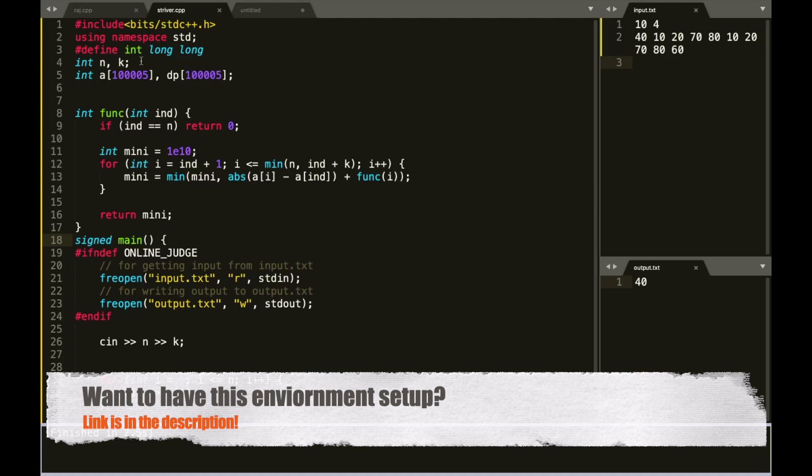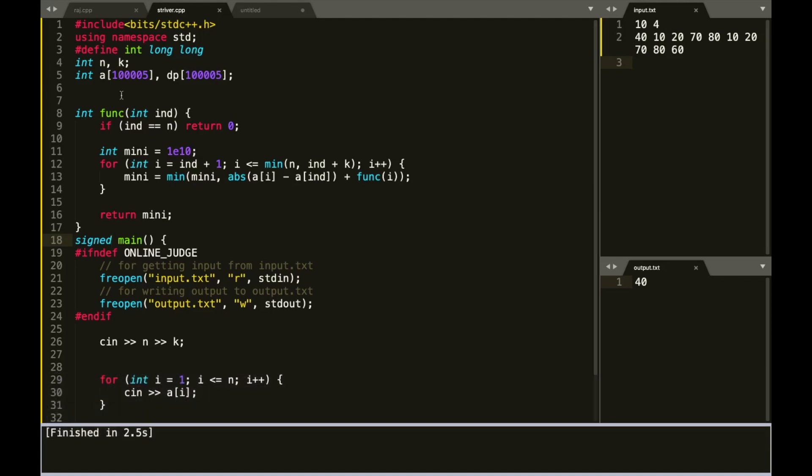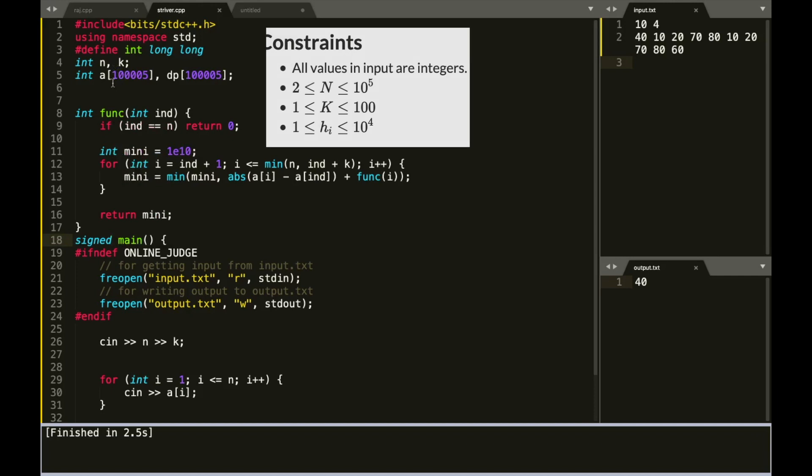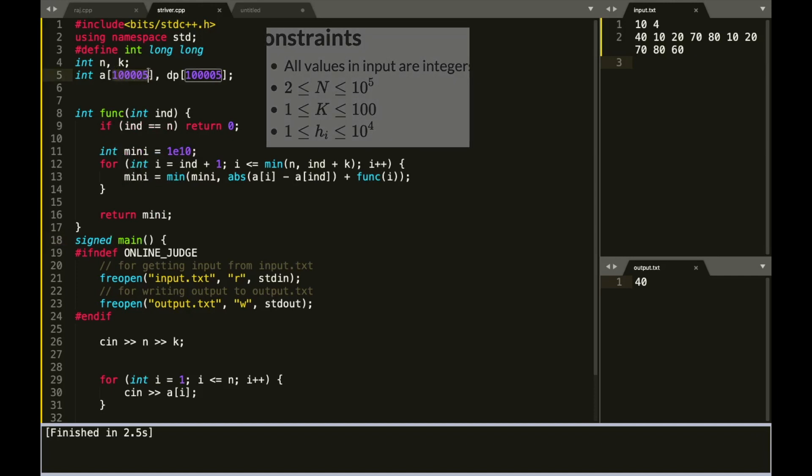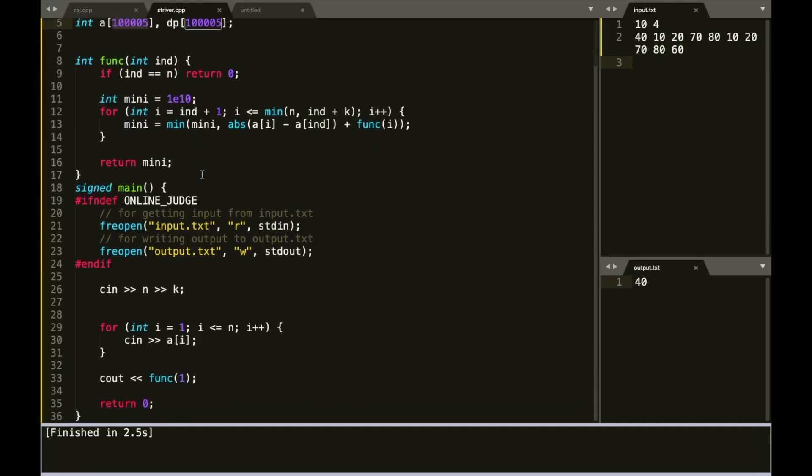In the code, what I've done is I've declared everything globally. And since the maximum value of a was 10 to the power 5, I've taken it as 10 to the power 5 plus 5 just for safety reasons. And then I've taken n and k as the input.